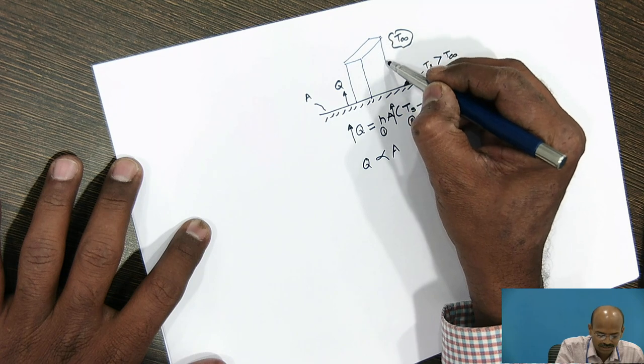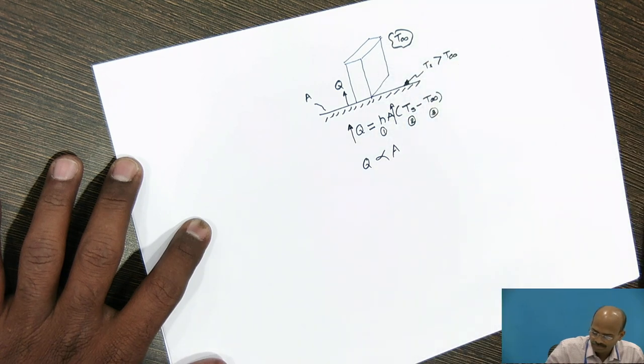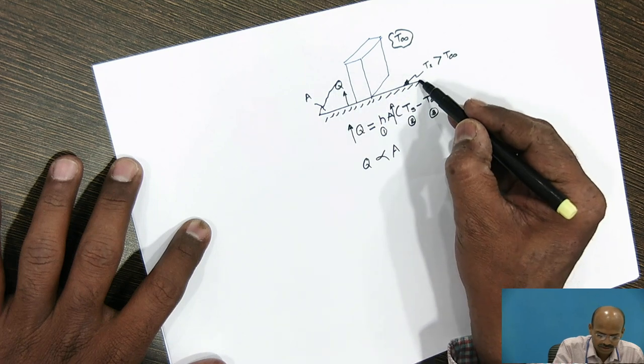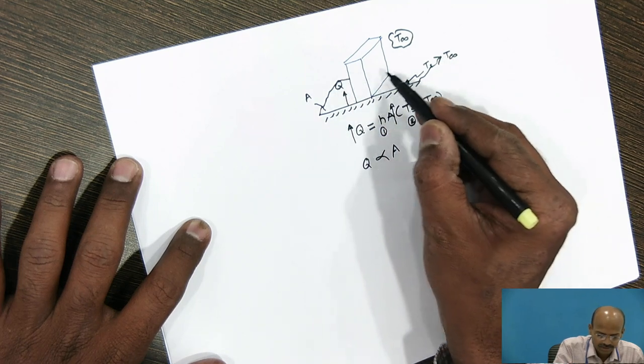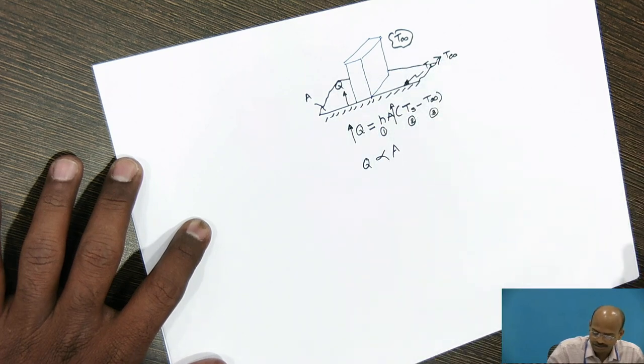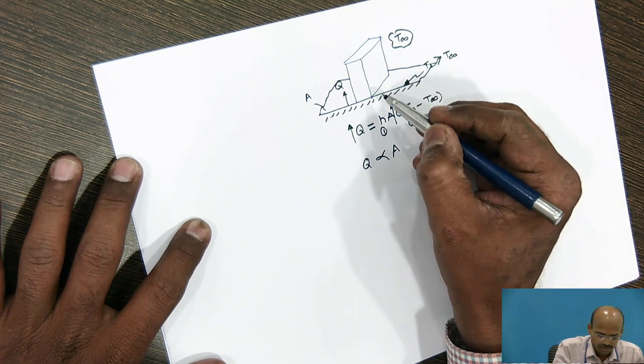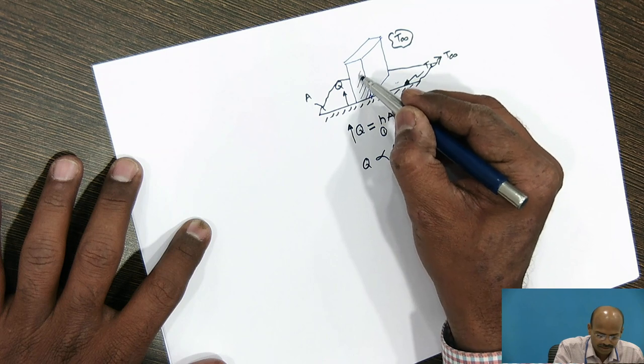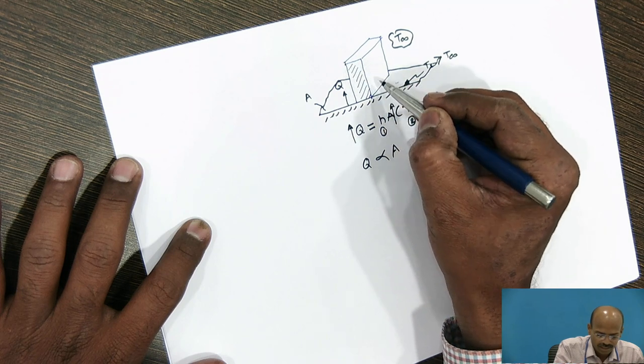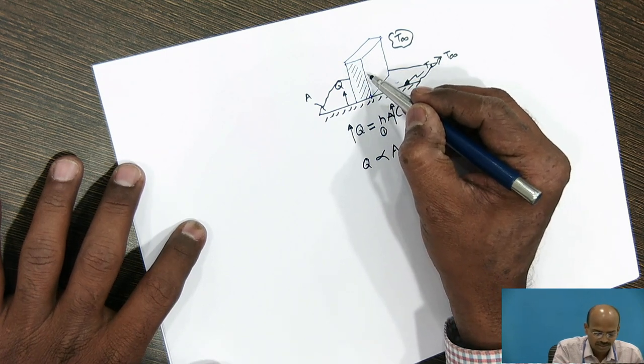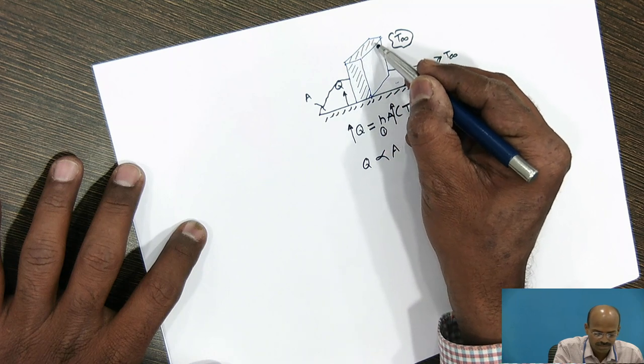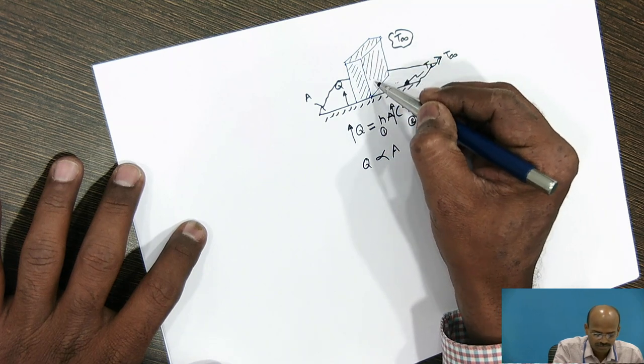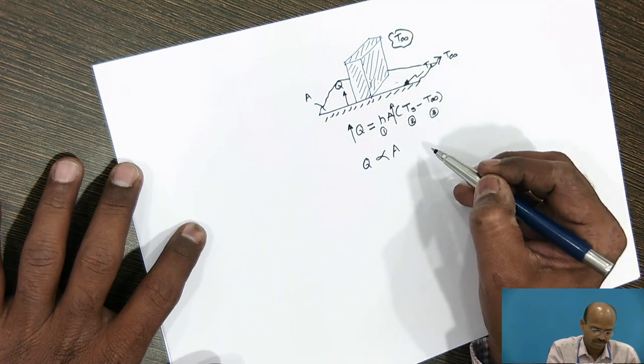We will start soldering such type of surfaces. So, you can call this as the extension, extension of surface. Suppose this is the base plate. On this base plate, we have increased the surface of this base plate by either casting this extended surface as the integral part of the base surface.